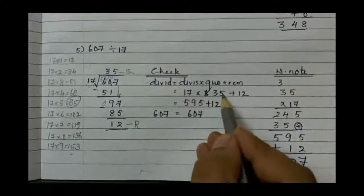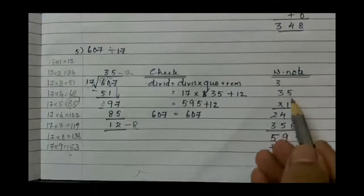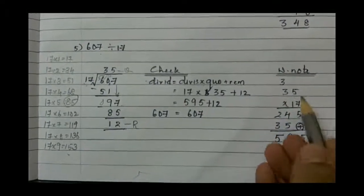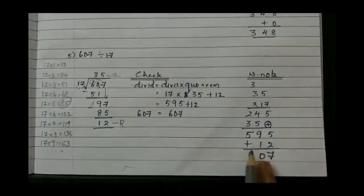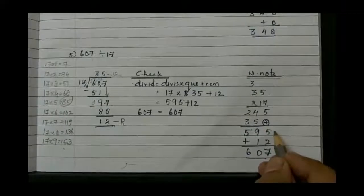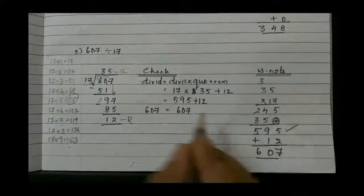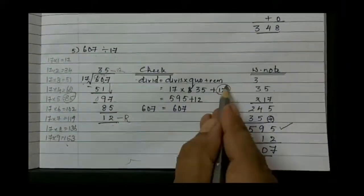So 17 into 35. Go for the working notes: 35 into 17. Write down the bigger above and the smaller below. It becomes easy. You multiply, you are going to get 595.